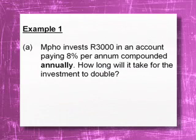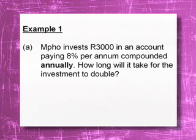Let's have some fun with the first example. Impor invests 3,000 Rand in an account paying 8% per annum, compounded annually. It's going to be annual — very important. Remember in Grade 11 we dealt with quarterly, monthly, and other compounding periods, but now we're dealing with an annual interest rate.